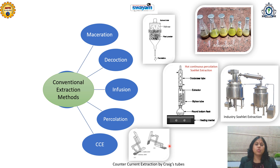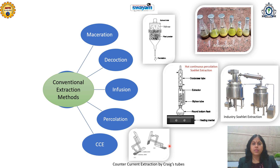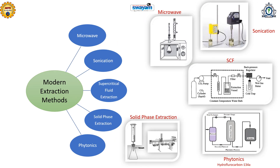The two solvents can then be separated and evaporated to dryness to obtain different types of phytochemicals. Thus, maceration, decoction, infusion, percolation, and counter current extraction methods are commonly utilized and very helpful for preparation of herbal plant extracts.